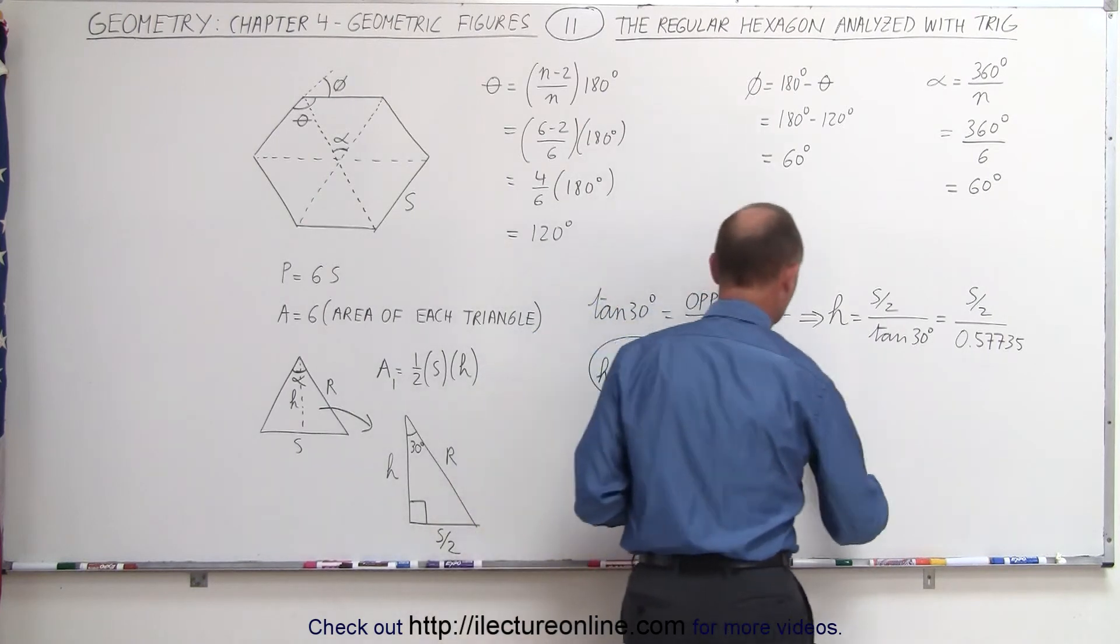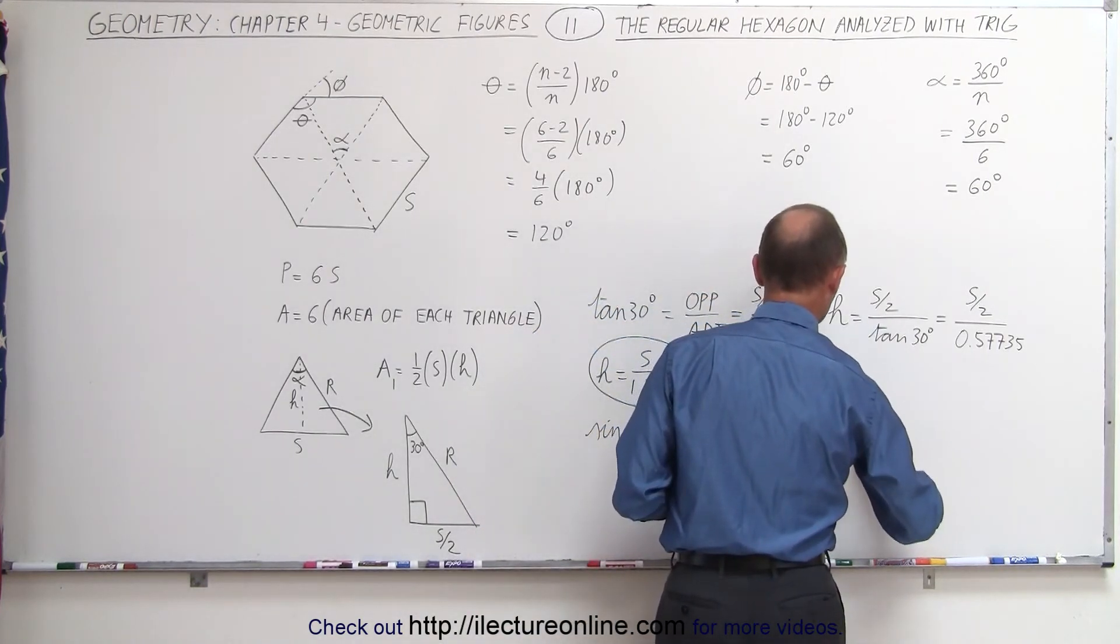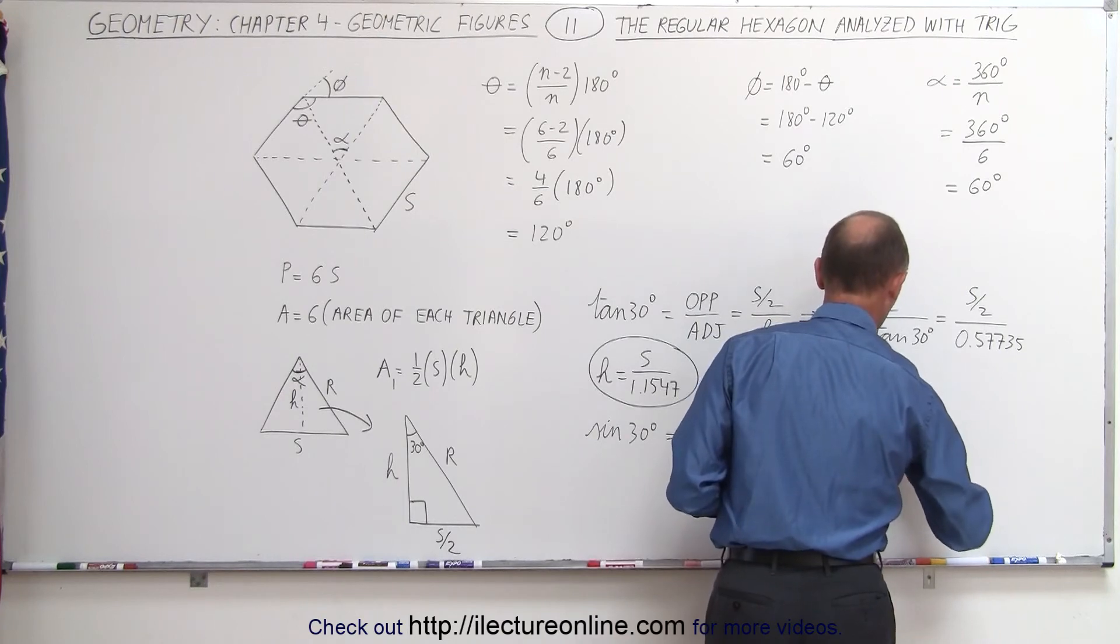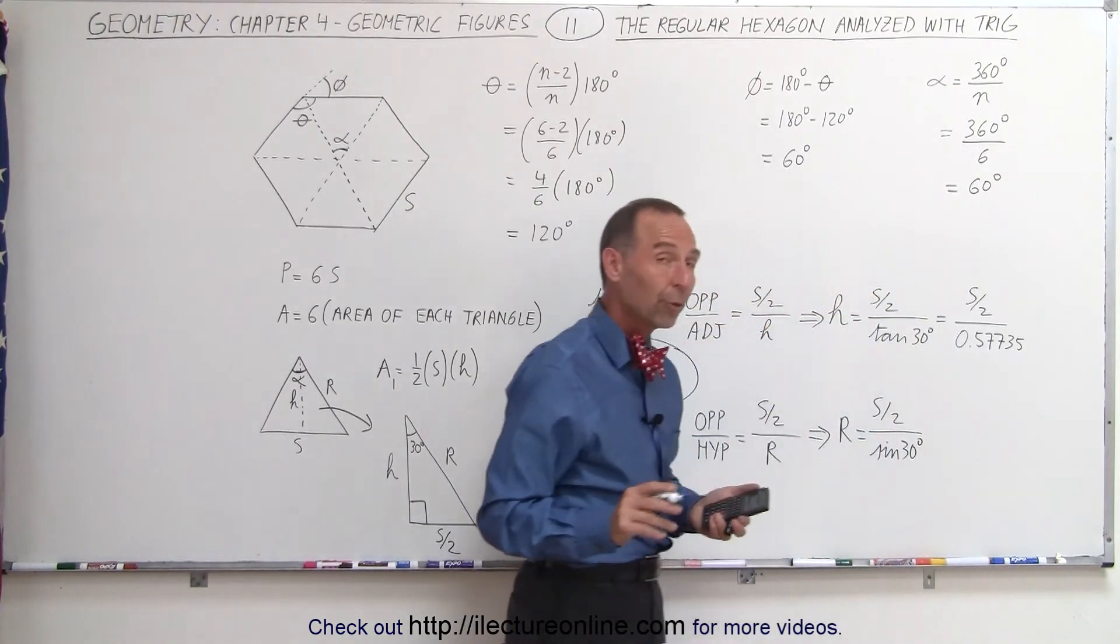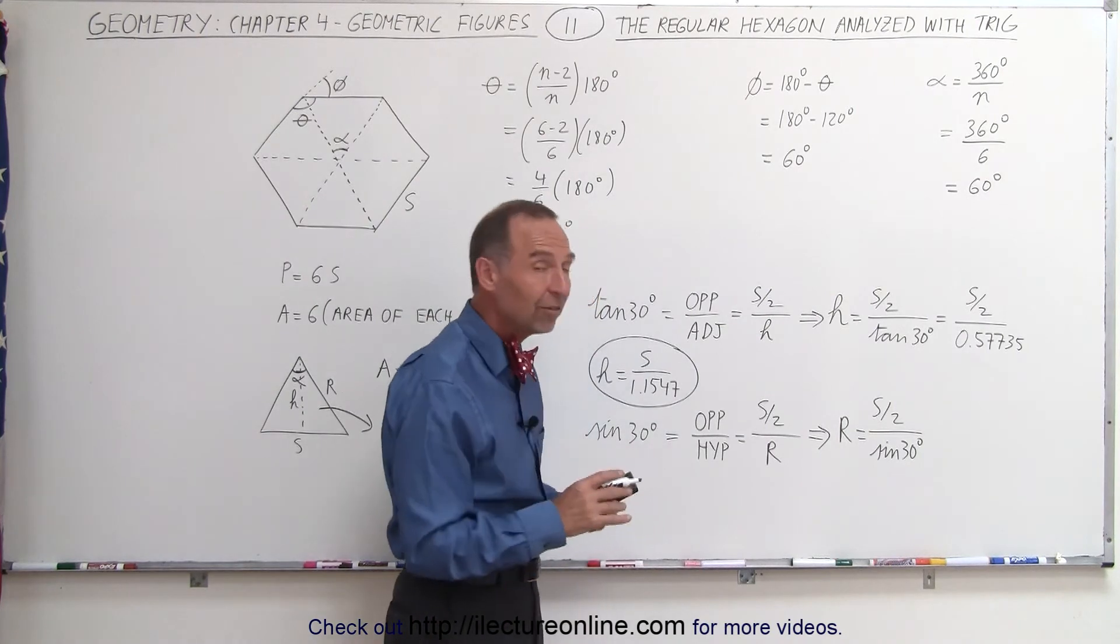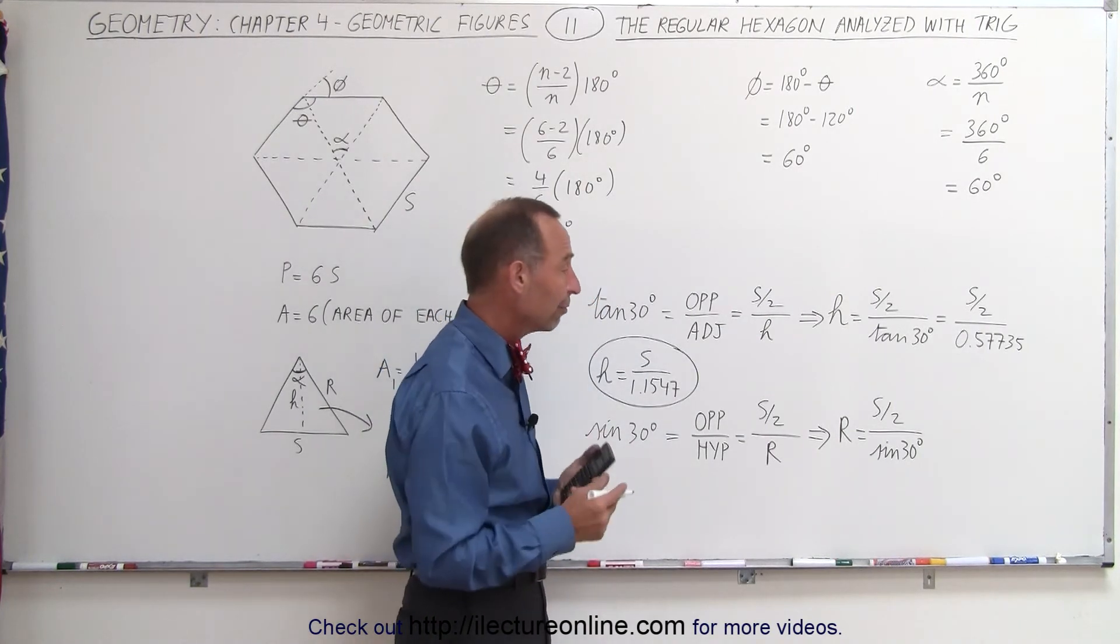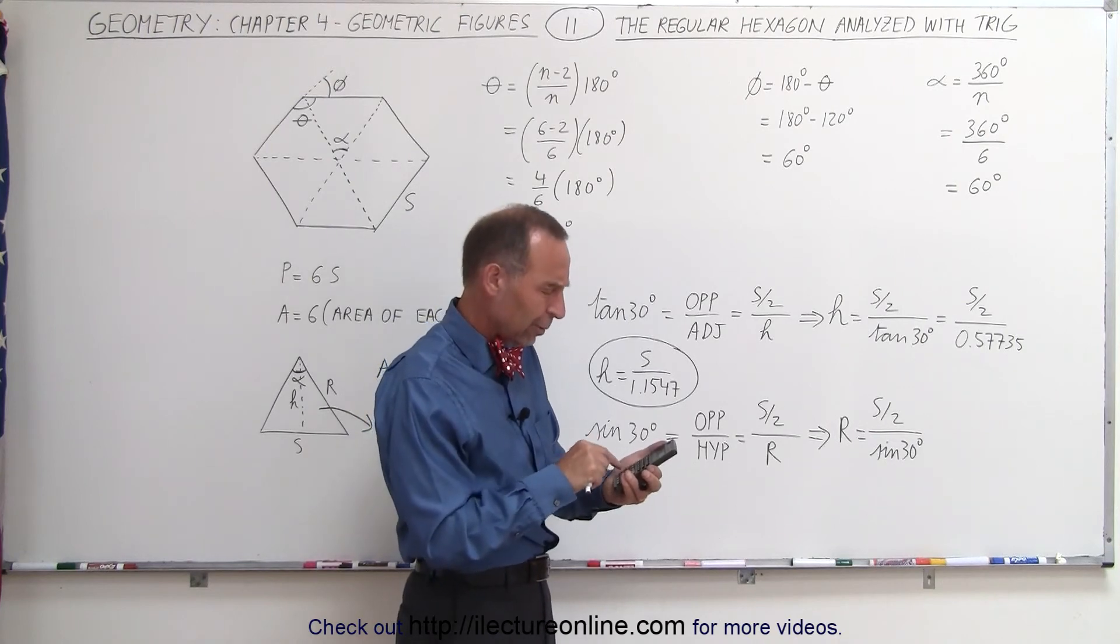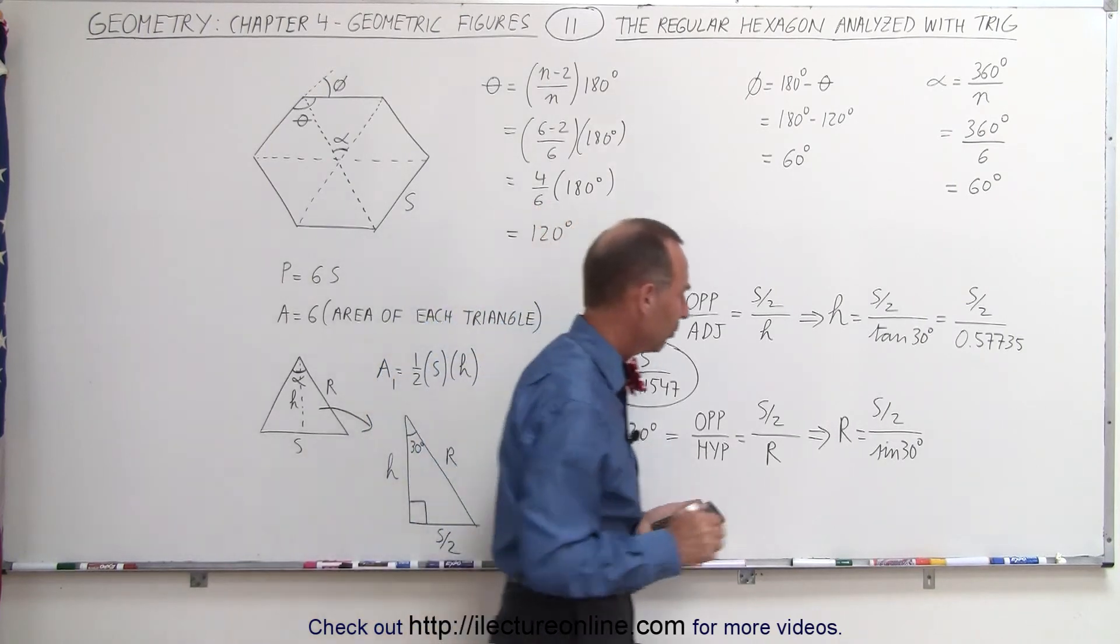Solving for R, we get R = (S/2) divided by sin(30°). Some of you may know that sin(30°) = 0.5. If you didn't know that, grab your calculator and find the sine of 30 degrees, and it's 0.5.